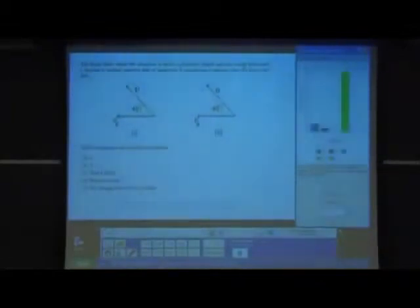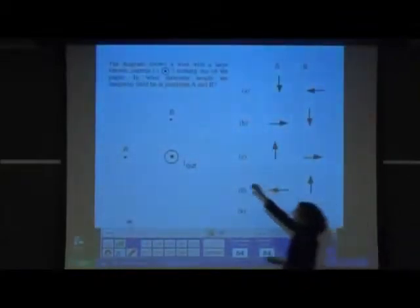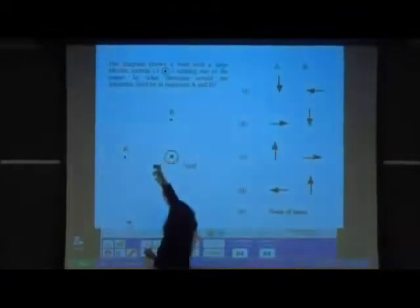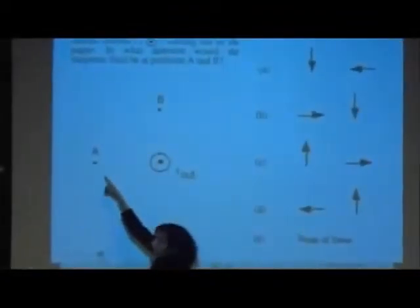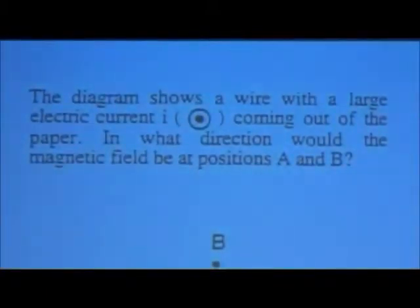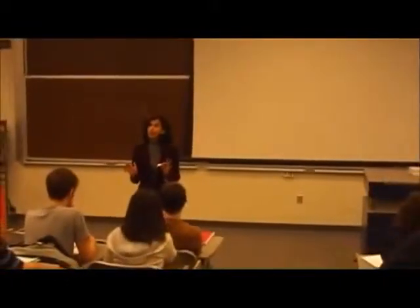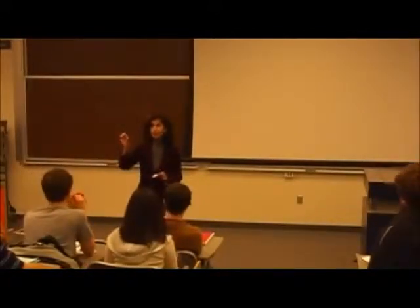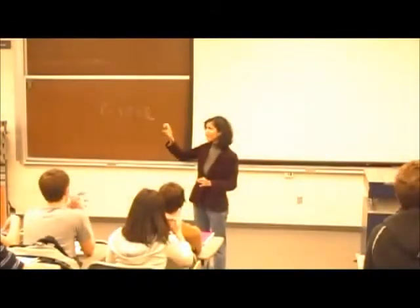The next question: the diagram shows an electric current coming out of the board. What is the correct direction of the magnetic field at point A and at point B? You have five choices. The current is coming out and you have to tell me the direction of the magnetic field produced by this current at A and B.